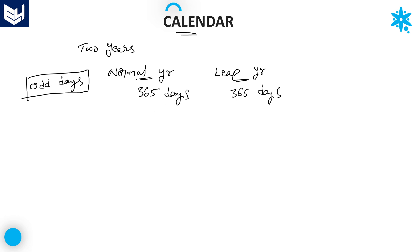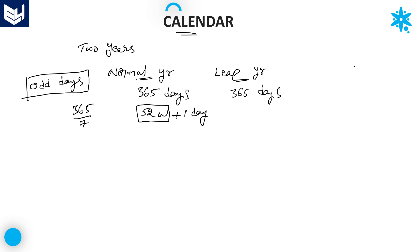365 days is nothing but 52 weeks plus 1 day extra. To convert any days into weeks, you have to divide that particular value — 365 — with 7. Whenever you want to convert any days into weeks, you divide by 7.